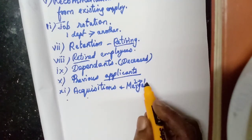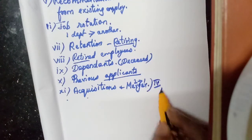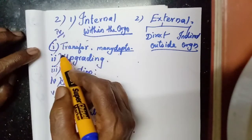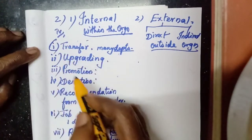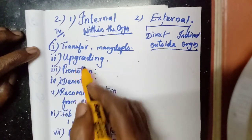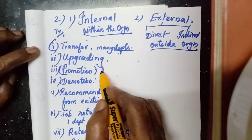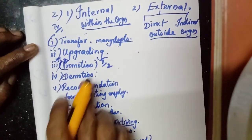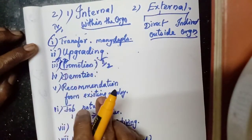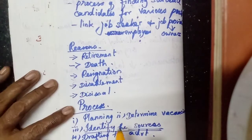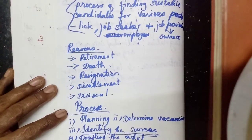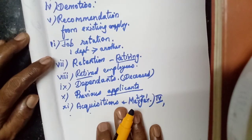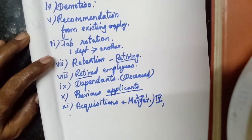All internal sources are the first five mark question. Internal sources you have to study. That promotion also — two more questions: what is promotion, what are the internal sources, the meaning of recruitment methods, what is recruitment. All these question answers I will explain for you in the Zoom class. Okay students, thank you very much.